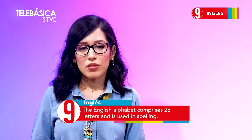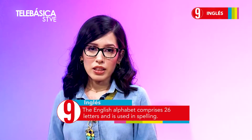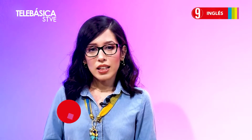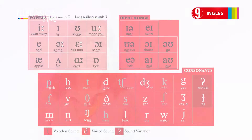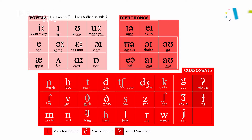It is very clear from the beginning that one thing is the English alphabet and another is the phonetic alphabet. The English alphabet comprises 26 letters and is used in spelling. Instead, the phonetic alphabet comprises 44 symbols and is conventionally used to indicate pronunciation. The symbols we observe in this table are those that correspond to the phonetic alphabet, which you can also observe in the English text.